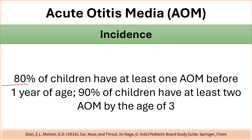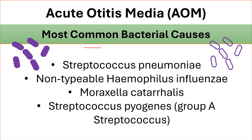About 80% of children have at least one acute otitis media before one year of age, and 90% of children have at least two episodes of acute otitis media by the age of three years. The most common bacterial causes of acute otitis media are Streptococcus pneumoniae, non-typable Haemophilus influenzae, Moraxella catarrhalis, and Streptococcus pyogenes.